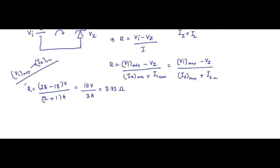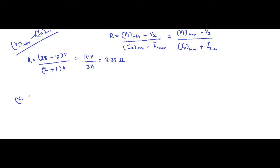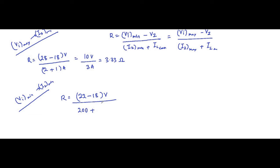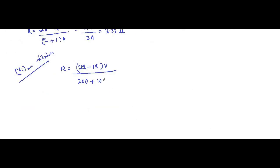We can also calculate R using the minimum input case. The minimum input voltage is 22 volts, Zener voltage is 18 volts, the minimum Zener current is 200 milliampere, and the constant load current is 1000 milliampere. So R equals 4 volts divided by 1200 milliampere, which also equals 3.33 ohms — the same result.